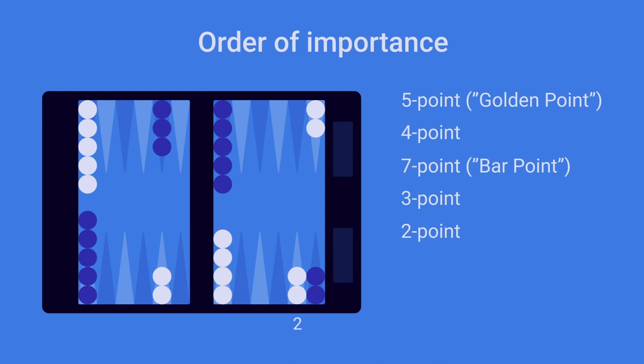The problem by making the two point is that you limit your game plan to blitzing and racing. It will be very difficult for the rest of the game to develop a prime structure with the two point made.